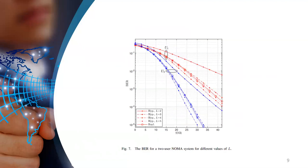This figure shows the bit error rate for two user NOMA system for different values of number of scatterers. And the result is also compared with the standard Rayleigh channel. And as can be seen from this picture, as the number of scatterers increase, the performance of hyper-Rayleigh channel starts approaching the Rayleigh or the standard Rayleigh channel.